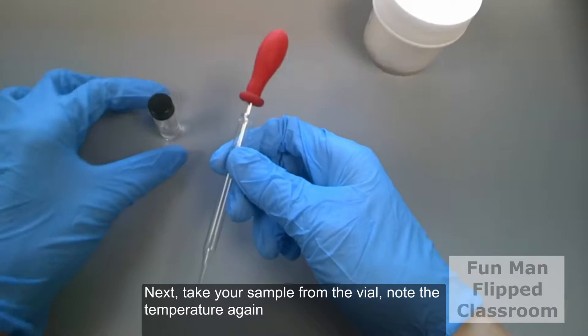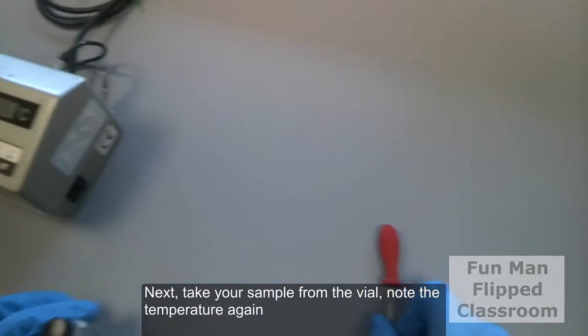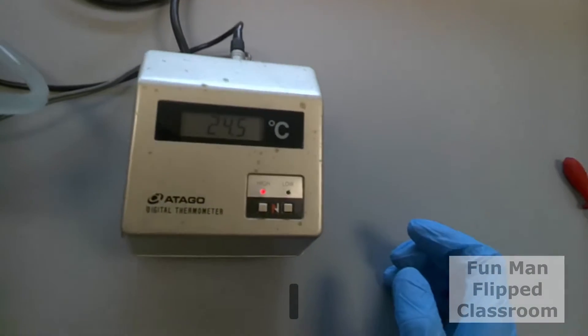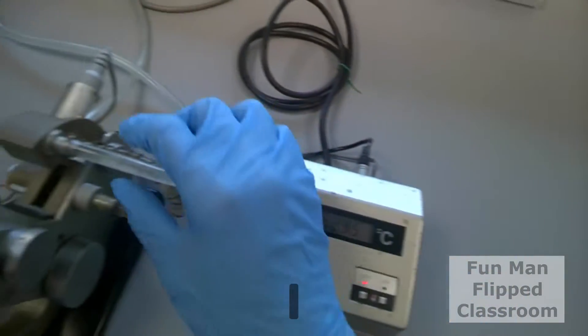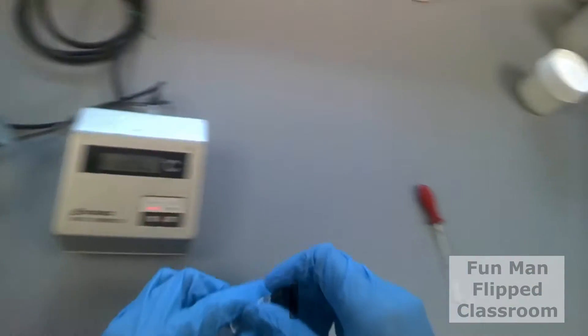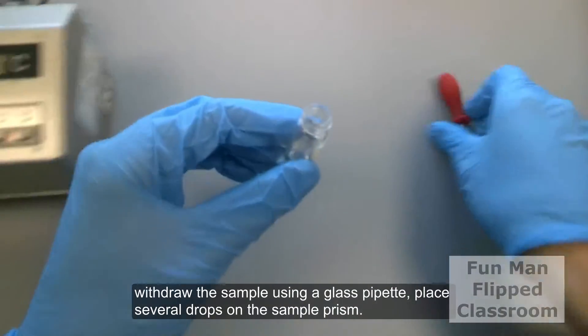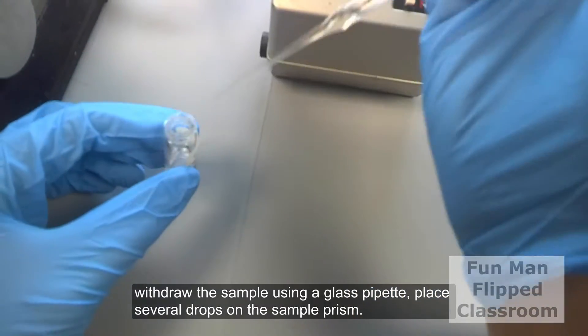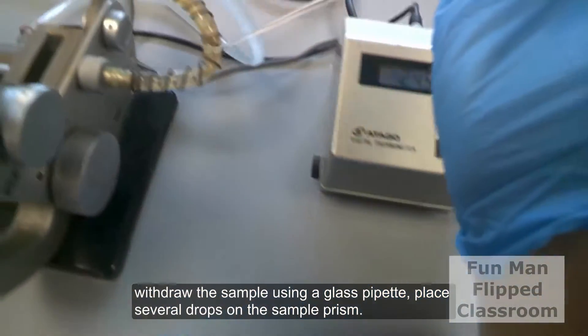Next, take your sample from the vial. Note the temperature again. And withdraw the sample using a glass pipette. Place several drops onto the sample prism.